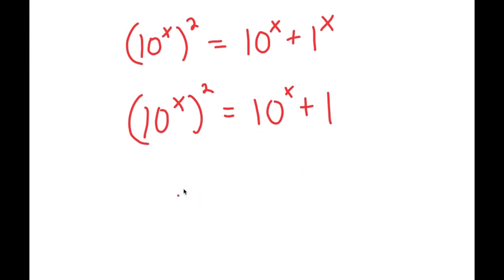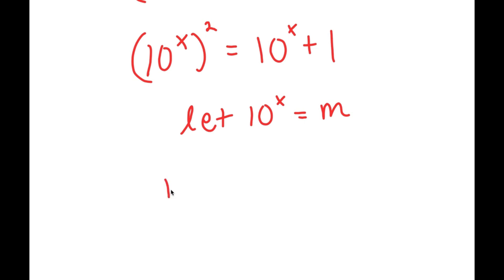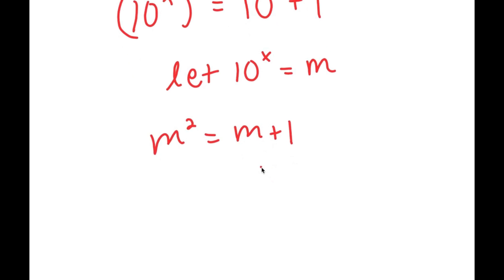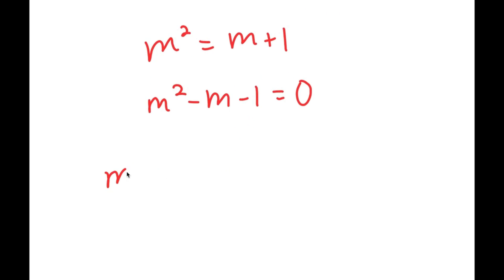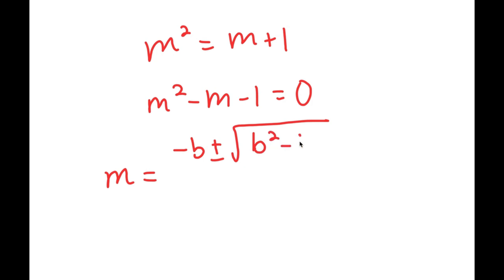I'm going to let 10 to the power of x equal to the variable m. So now I have m squared is equal to m plus 1. And this turns into m squared minus m minus 1 is equal to 0. Now I'm going to use the quadratic formula to solve this.